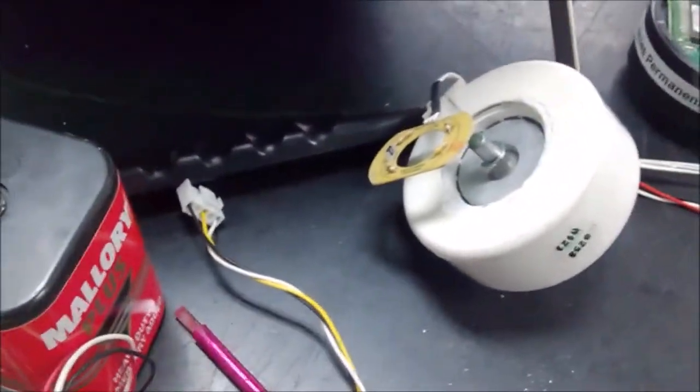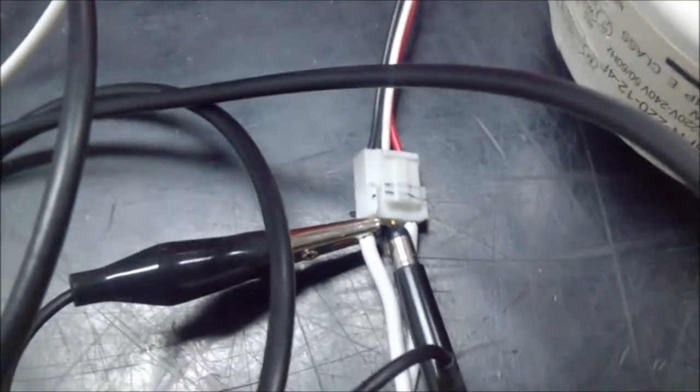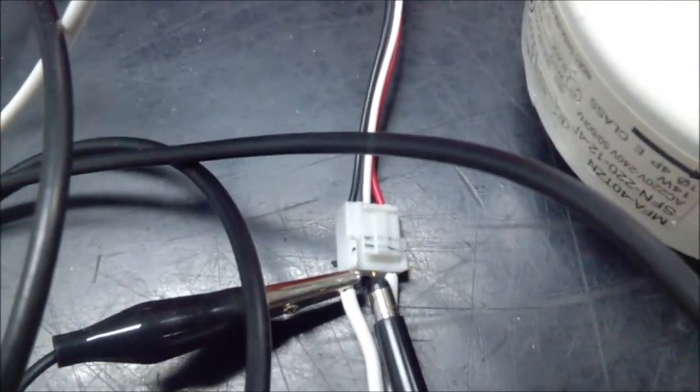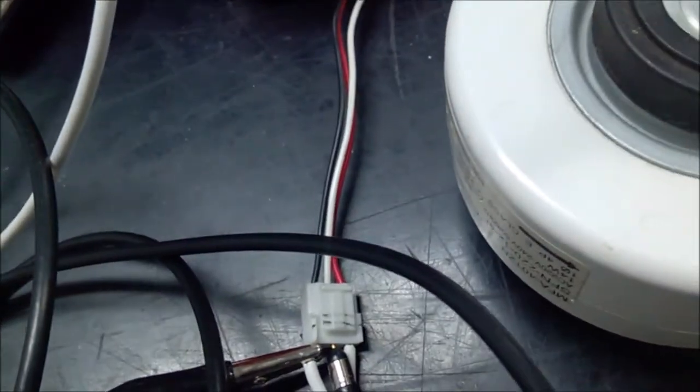I've got another one set up here and you can see we've got a red, black and a white. Now the red and the black is getting a 12 volt reference signal DC and sending back that signal as a pulse from the Hall effect pickup on the white.